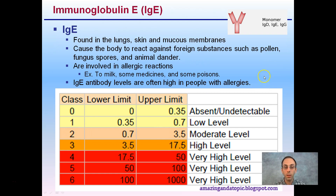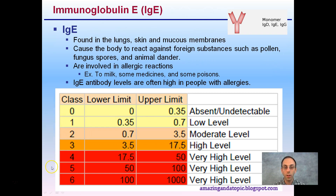IgE — if you suffer from allergies, this is one you can blame. They're found in the lungs, skin, and mucous membranes and cause the body to react against foreign substances such as pollen, fungal spores, and animal dander. They're involved in allergic reactions, and levels of IgE are often high in people with allergies. There are defined limits for low, moderate, high, and very high levels. If you're sensitive to certain pollens or allergens, you can probably blame IgE for your reactions.